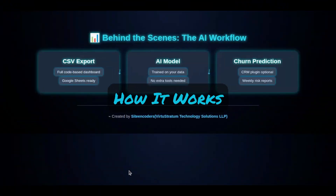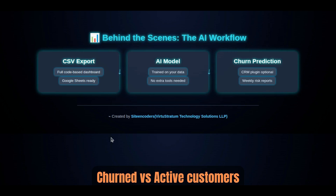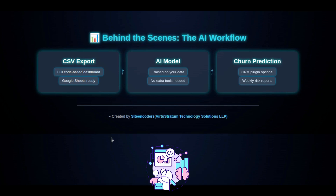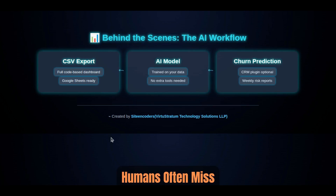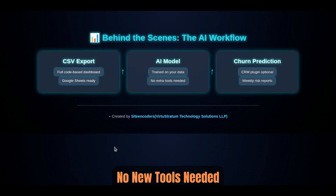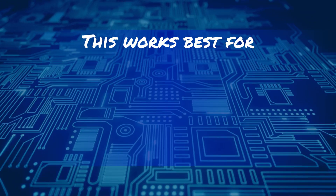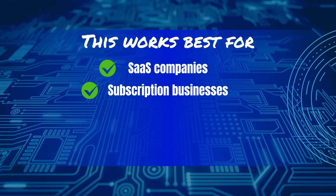Behind the scenes, here's the AI workflow we typically use. We trained a machine learning model on historical data including churned versus active customers. The AI then finds hidden patterns — the kind humans often miss — and uses those to flag future risk. The best part: it can be trained on your existing data, no new tools needed.